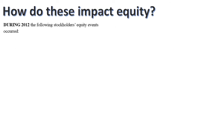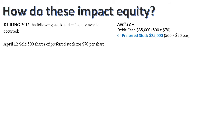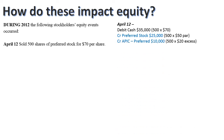Now we've got to figure out how our transactions impact equity. On April 12th we sell 500 shares of preferred stock for $70 a share. The easiest thing is to figure out cash right away — 500 shares at $70 each gives us $35,000. The amount that goes to preferred stock is only the par value. The remaining $20 excess goes to APIC, the additional paid-in capital in excess of par. So there is our first transaction.